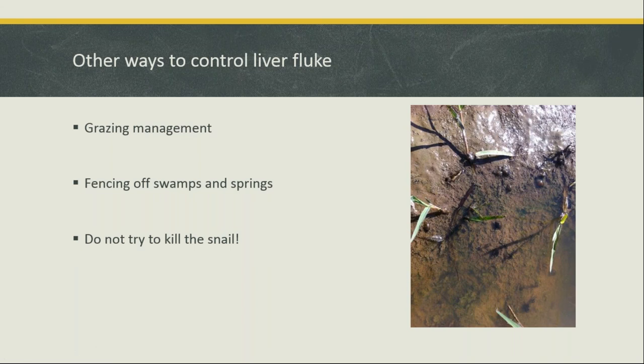Another approach is grazing management — graze those swampy and gully areas toward the end of winter when snails aren't active, so if animals do go there the risk of picking up infection is minimized. Also try to graze adult animals in high-risk areas rather than young growing animals, because as we've seen, liver fluke really knocks back growth. If you do have to graze swampy areas with high fluke burdens, push your adult animals in rather than young stock.